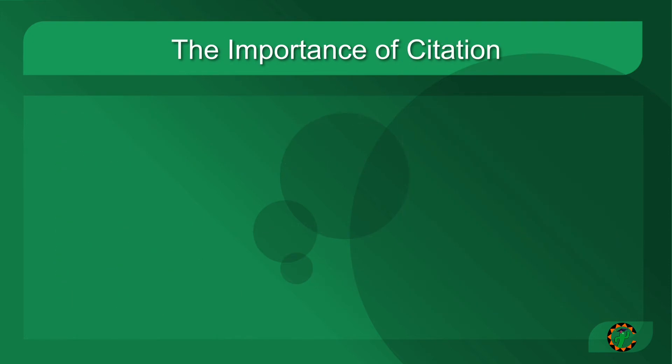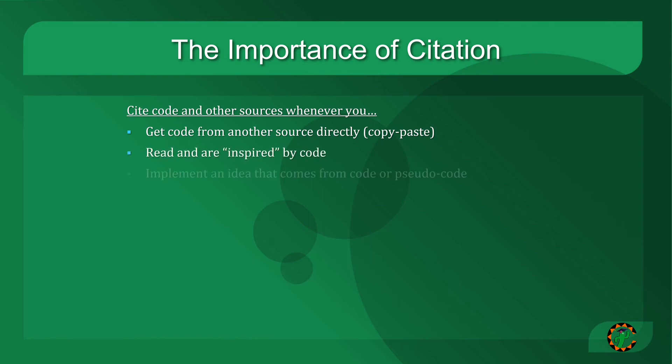Another critical piece of writing software is citing when you use the ideas of other people. None of us learn in a vacuum, and we all stand on the shoulders of giants. But we need to give credit where credit is due. You should cite code, for example, whenever you get code from another source directly via copy-paste when it's acceptable to do so, anytime you read and are inspired by code. If you implement an idea that comes from code or pseudocode, written by someone else, or if for any reason you do not wholly and solely, alone, all by yourself, completely create code without the help of anyone else, in all of these cases, you should have a citation.